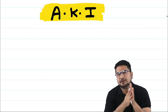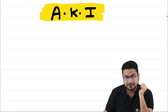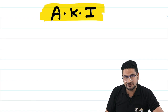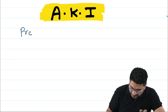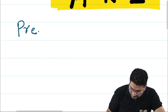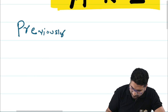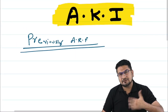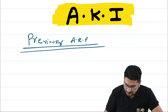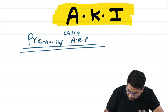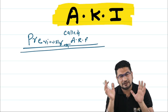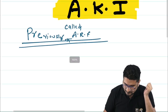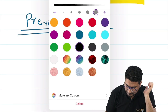The next topic is acute kidney injury (AKI). This is something that is reversible. Previously it was called acute renal failure (ARF), but because it is reversible we don't use the term 'failure' anymore. Now we call it AKI — acute kidney injury. In some MCQs you may see 'acute renal failure,' which means the same thing as AKI.